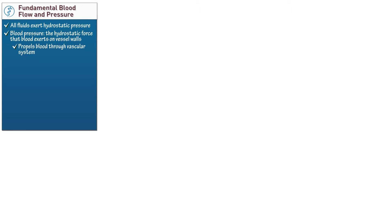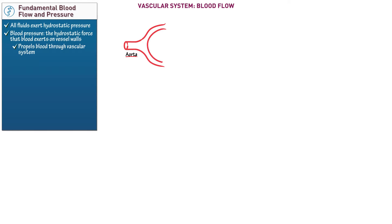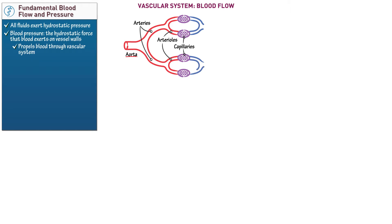Let's illustrate the direction of blood flow from the aorta, which is the largest artery, to the vena cava, which is the largest vein. The aorta carries blood away from the left ventricle of the heart and branches into smaller arteries, then into arterioles, which feed into networks of capillaries, merging into venules, then into veins, and finally into the vena cava. The superior and inferior vena cava return blood to the right atrium of the heart.